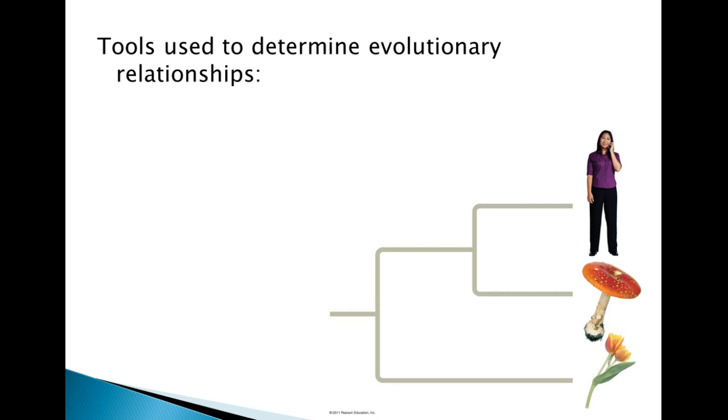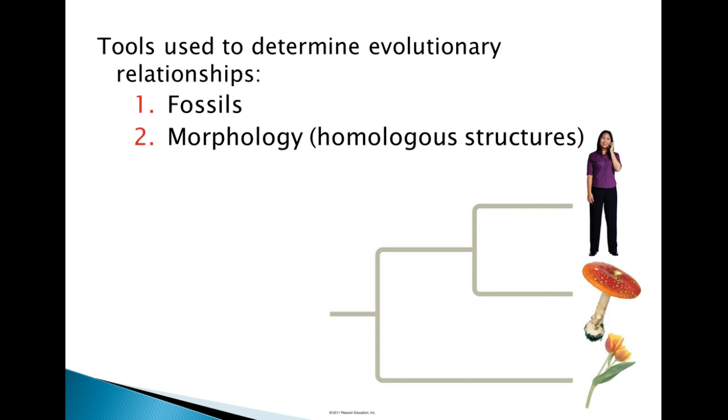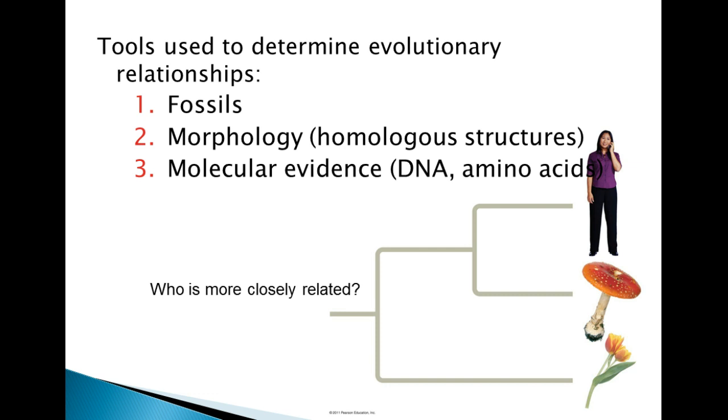There are three tools biologists use to determine evolutionary relationships. The first is the use of fossils, or the remains of living organisms or their imprinting on rocks. The second is to look at the morphology of organisms, meaning homologous structures or what structures the organisms have in common. The third is to examine the molecular evidence, or the DNA/amino acid structure of these organisms.